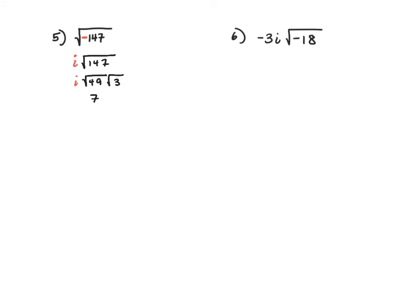And that i is still there. Square root of 49 is 7. And then I'm going to be real fancy and write it correctly, 7i root 3. And that's my answer.